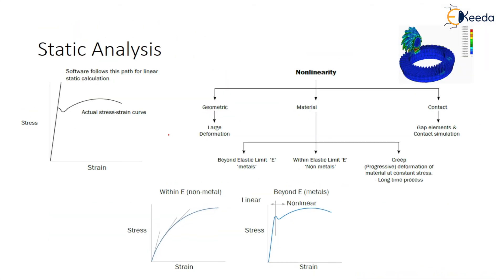In linear static analysis, we observe that stress (sigma) is proportional to strain (epsilon). That means stress is proportional to strain — it is a linear curve. This linear curve represents the elastic limit, where stress and strain are proportionally going in the same path. Whenever you apply the load condition, the stress and strain proportionally increase together. So that is linear static analysis.